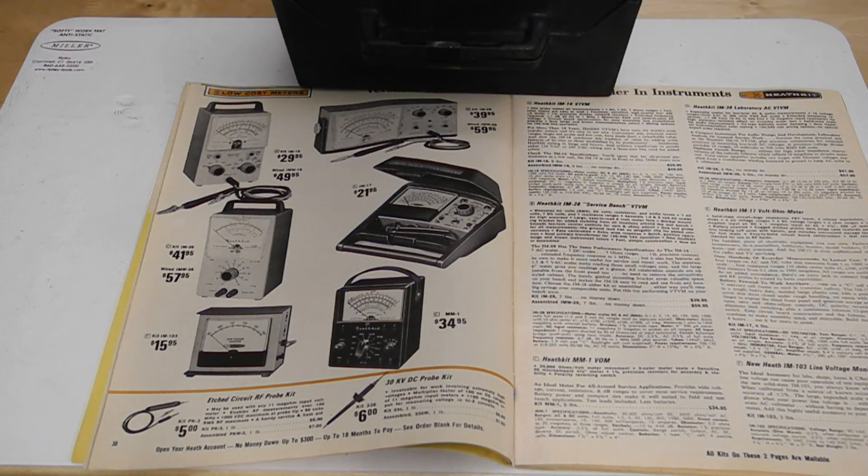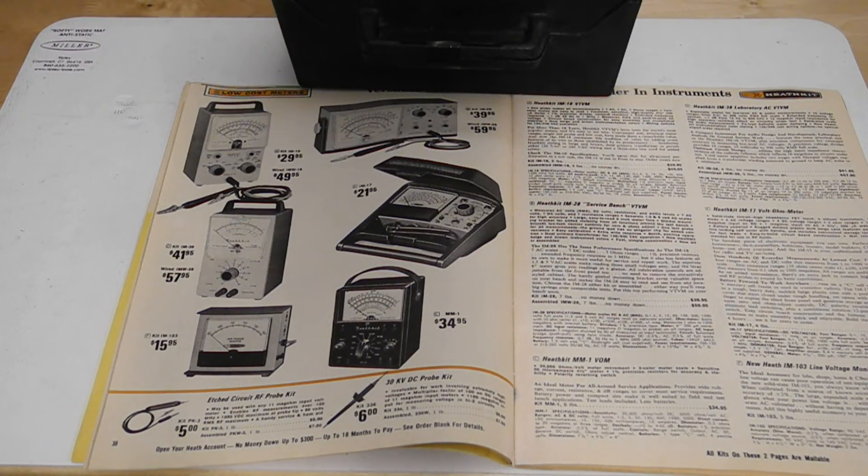The IM17 was offered only as a kit that the user would assemble. The catalog listings indicated that it could be assembled in three to five hours and no other instruments were needed to calibrate it.